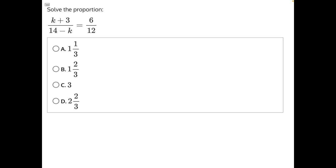To solve this proportion, we need to utilize cross-multiplication. We multiply 6, the numerator of this fraction, to the denominator of the other fraction, which gives us 6 times (14 - k).